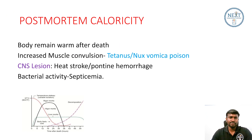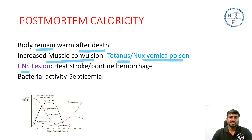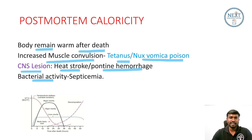Post-mortem caloricity refers to the body remaining warm after death. This can be due to increased muscle convulsions caused by tetanus or nux vomica poison. In CNS lesions it could be due to heat stroke or pontine hemorrhage. Bacterial activity causing septicemia can also be responsible.